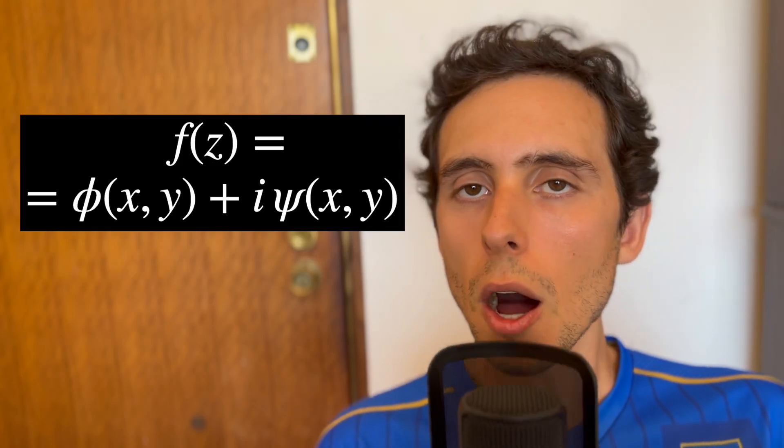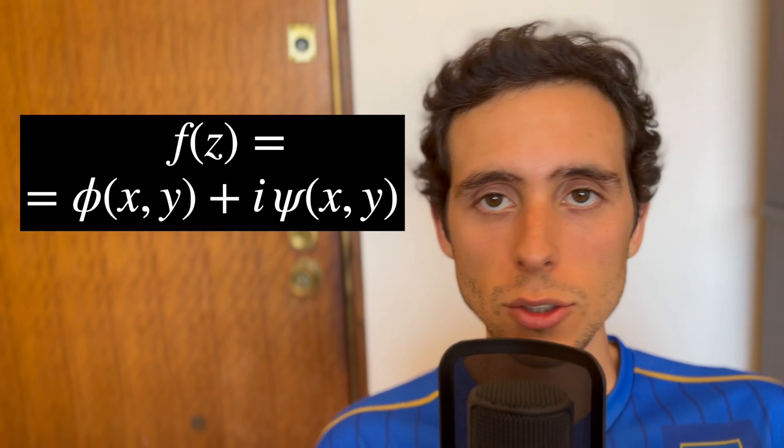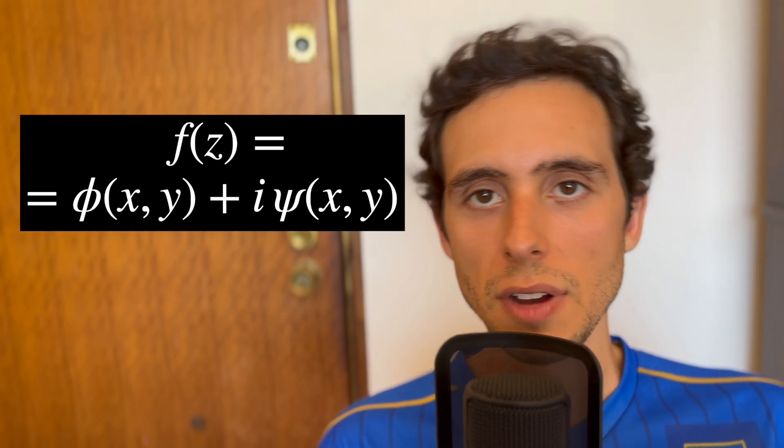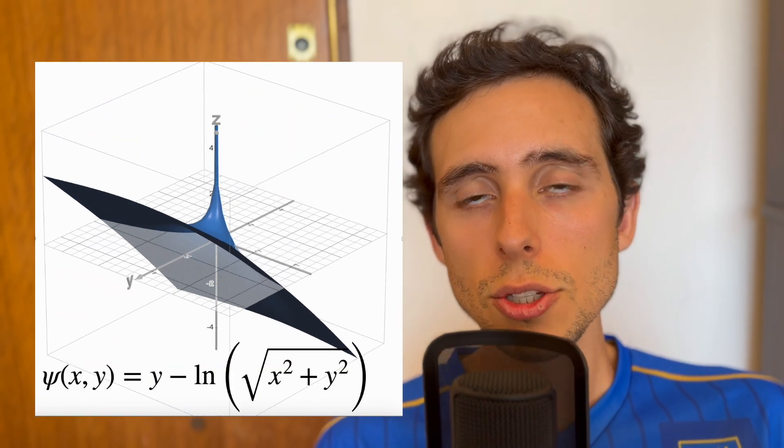In this context, the potential flow describes the flow of an incompressible and irrotational fluid. Translating it into mathematical terms, we have a complex potential function f of z written as phi of xy plus i psi of xy, where phi is the velocity potential and psi the stream function.